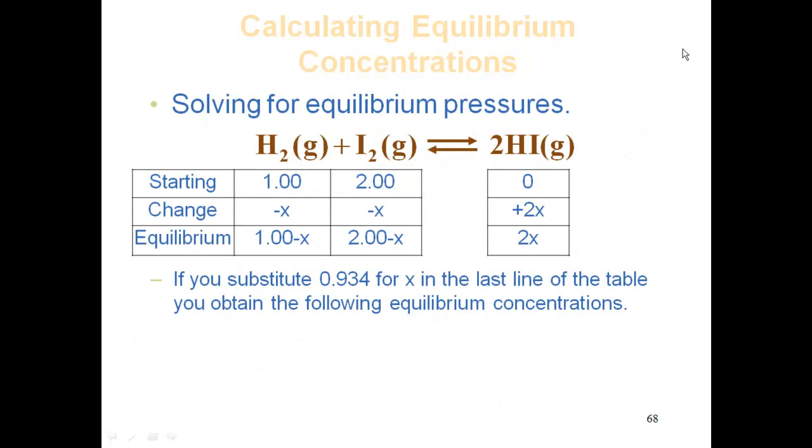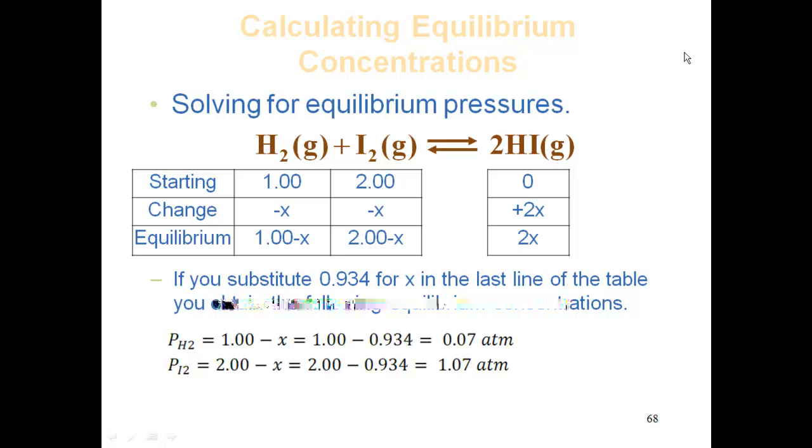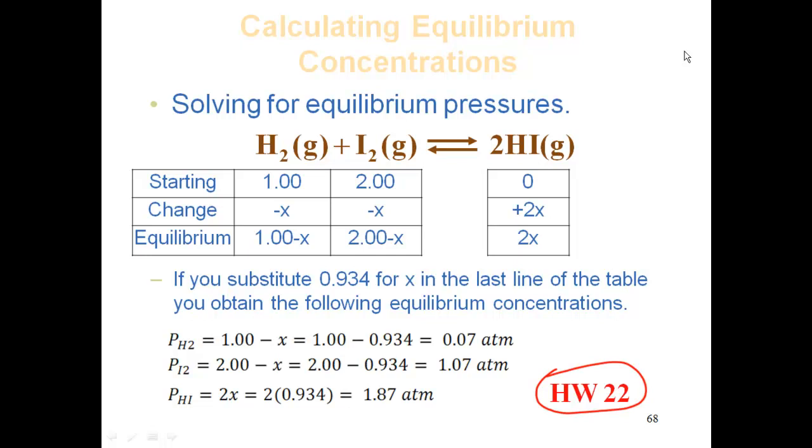Getting back to our problem, I solve for my partial pressure of hydrogen at equilibrium is 1 minus X, so it would be 1 minus 0.934, which is 0.066 atmospheres. I2 would be 2 minus X, which is 2 minus 0.934, which is 1.07 atmospheres. And for my partial pressure of HI, which is 2X according to our expression, it's 2 times 0.934, which is 1.87 atmospheres.